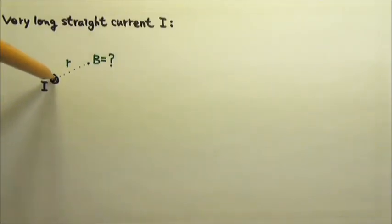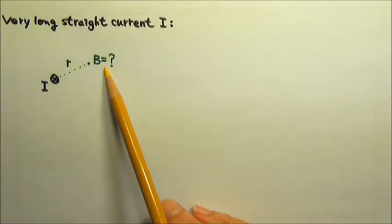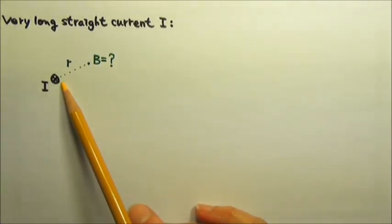There's a very long straight current I that is perpendicular to the paper and goes into the page. Find the magnetic field produced by this current over here a distance R away.